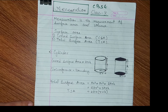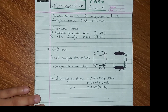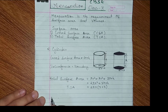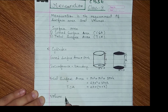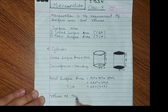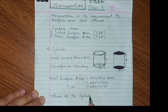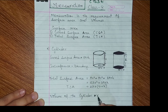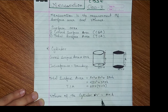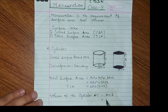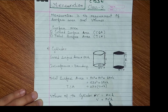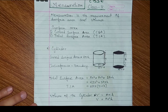Now the total surface area of the cylinder. Volume of the cylinder: the formula is base area into height, so base area is πr² into h. Volume = πr²h. This is simple.